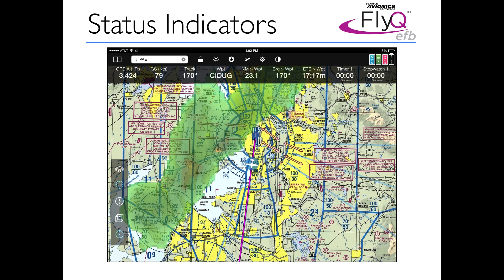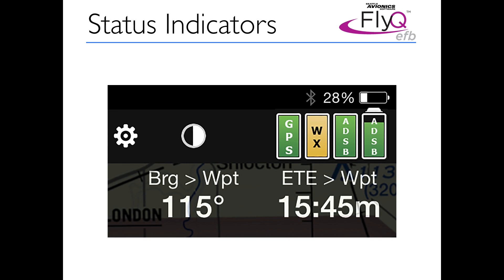Status indicators are in the upper right corner of the screen. GPS green means we have a good solid GPS signal updated recently. Weather is yellow, meaning we are receiving weather but it's getting a little dated. We have an ADS-B receiver connected and working properly. The fourth indicator shows a battery-powered ADS-B system at about 80–90% battery. All of that at a glance.